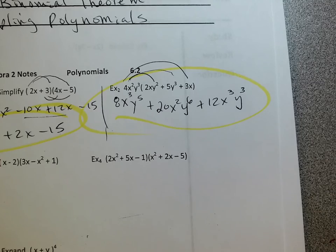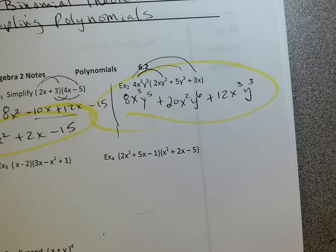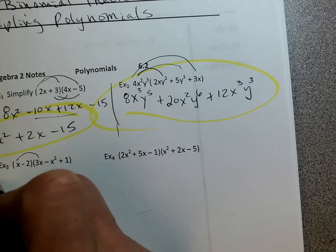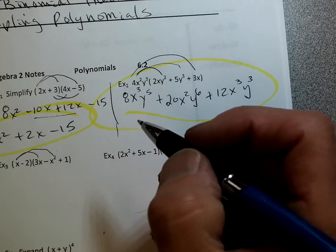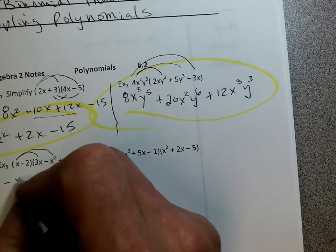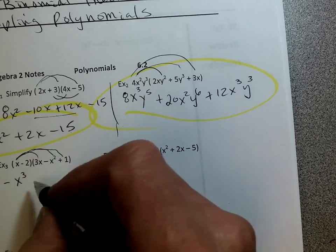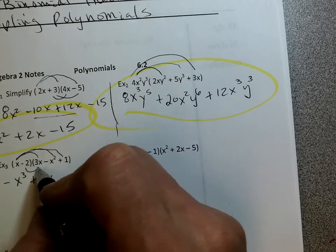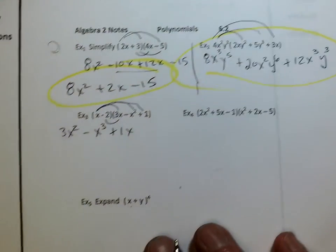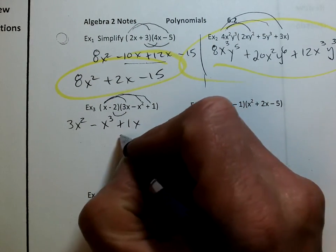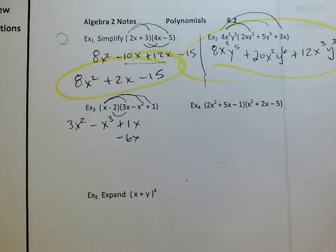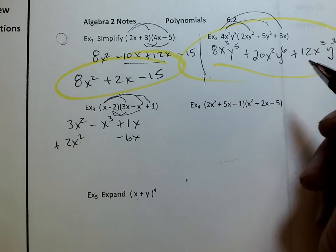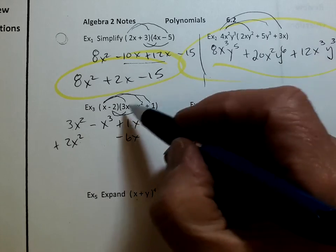Example three, same stuff. Example three and number four, there's nothing new. I'm going to get 3x squared minus x cubed plus 1x. Minus 6x. I'll put that right there. I like to line them up. Positive 2x squared. I'll put that way over here because I like to line them up. Makes it easier for me. And then minus 2.